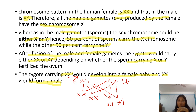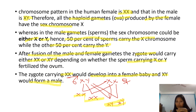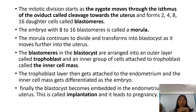If the father has XY and the mother has XX, then through cross multiplication, if there are four children, two will be female and two will be male. So the zygote formation happens, and then the mitotic division starts.